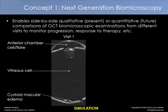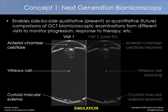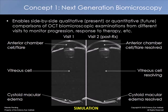Here's a simulation of how it might be used. At the first visit, a patient has anterior chamber cell and flare visible on OCT — which has recently been demonstrated in the peer-reviewed literature — as well as vitreous cell and cystoid macular edema. Imagine the examining physician institutes a treatment and sees the patient back at a follow-up visit. By comparing the images side by side, the examiner can say: your anterior chamber cell and flare have resolved, your vitreous cell is better but still present, and your cystoid macular edema is mostly gone.